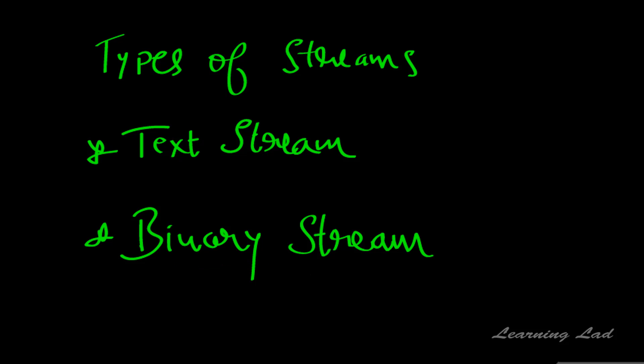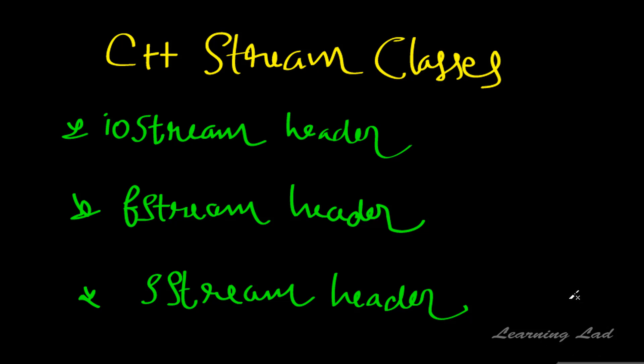We are now going to move to the next topic: C++ stream classes. In C++, we have three main stream-related header files: iostream, fstream, and sstream, which we are going to learn in the upcoming tutorials. The iostream header defines the classes used for standard input/output operations. For example, cin and cout are objects of classes defined in this iostream header.